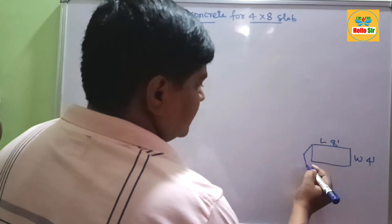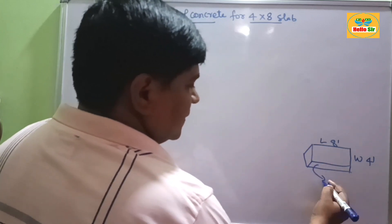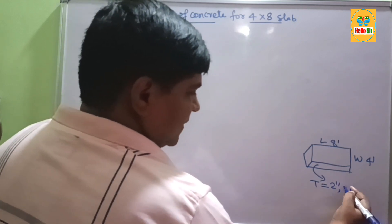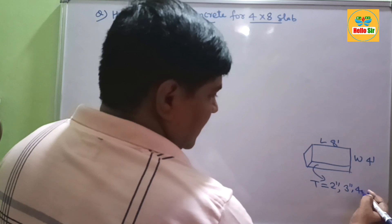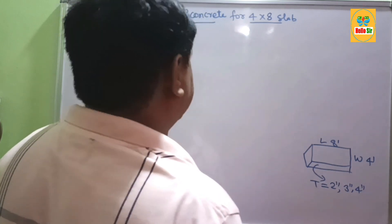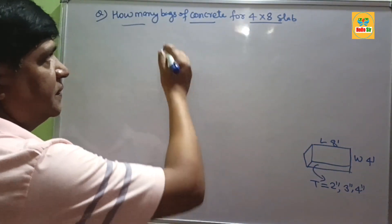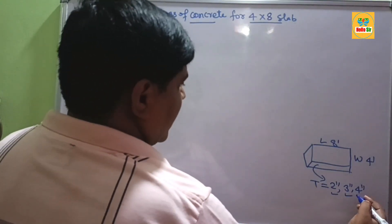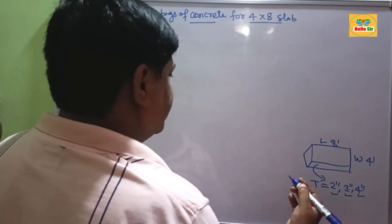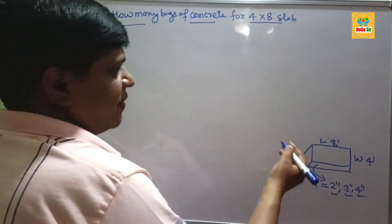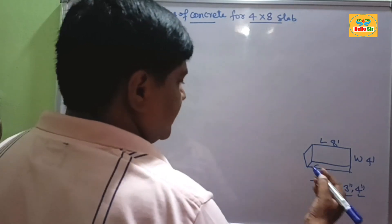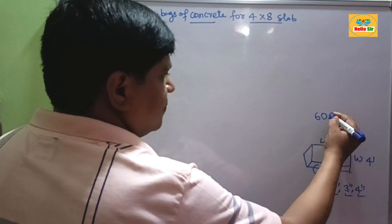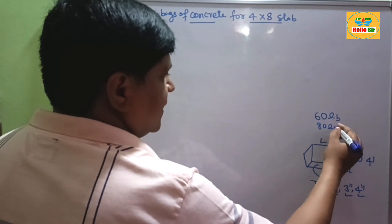The thickness may be either 2 inches thick, 3 inches thick, or 4 inches thick. Now, how much concrete bag is required at 2 inches thick, at 3 inches thick, and at 4 inches thick? It is very simple — you just find out the volume of concrete. There are 2 types of concrete bag: 60 lb bags and 80 lb bags.